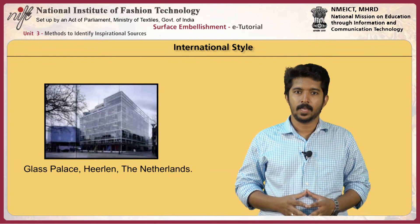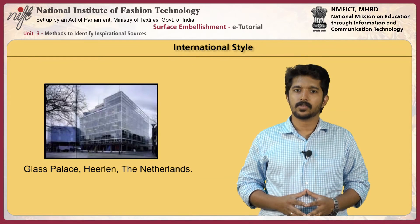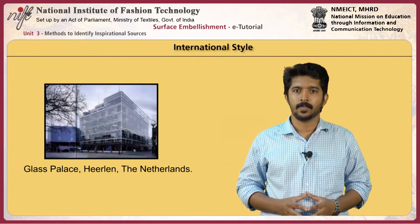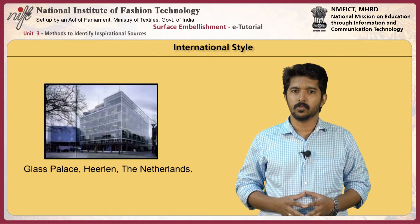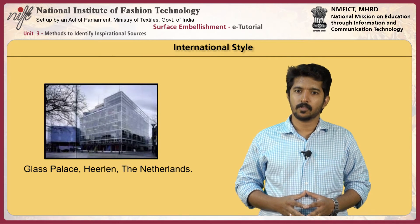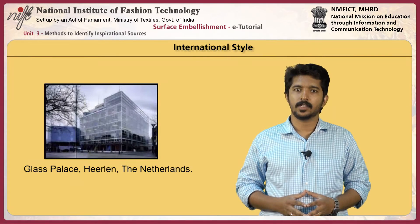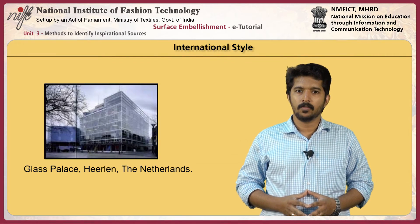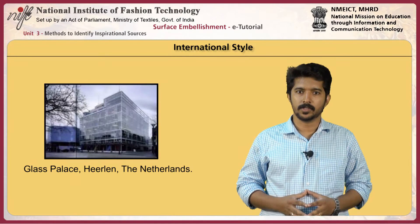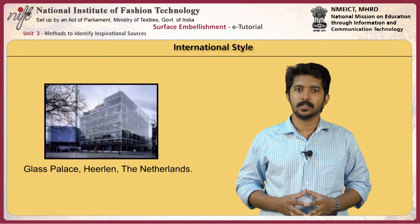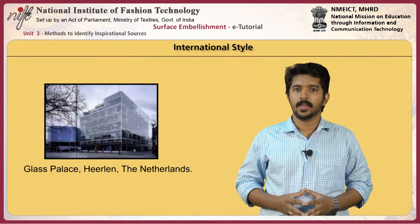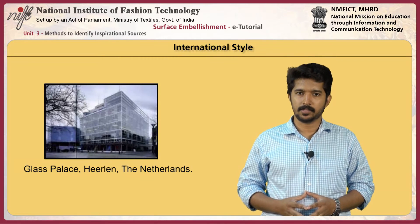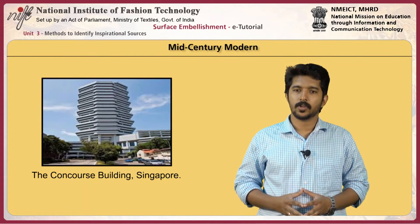International Style was a major style in the 1920s and 1930s, at the beginning of the modernist movement. A strict set of design rules is one of the key components of International Style. Villa Savoye by Le Corbusier and the Glass Palace in Heerlen, the Netherlands, are both great examples.